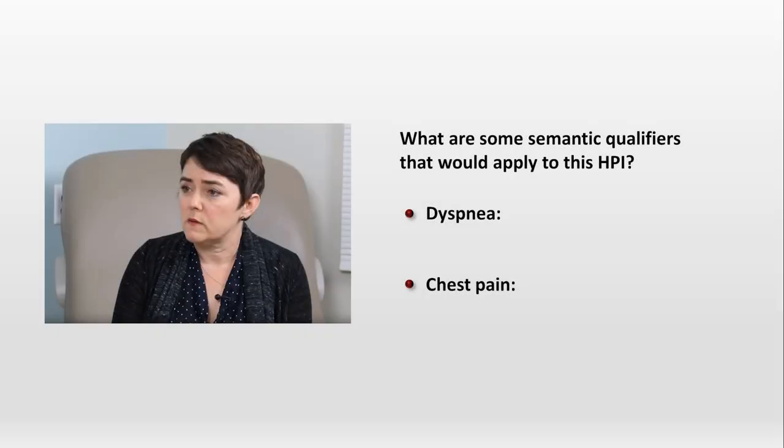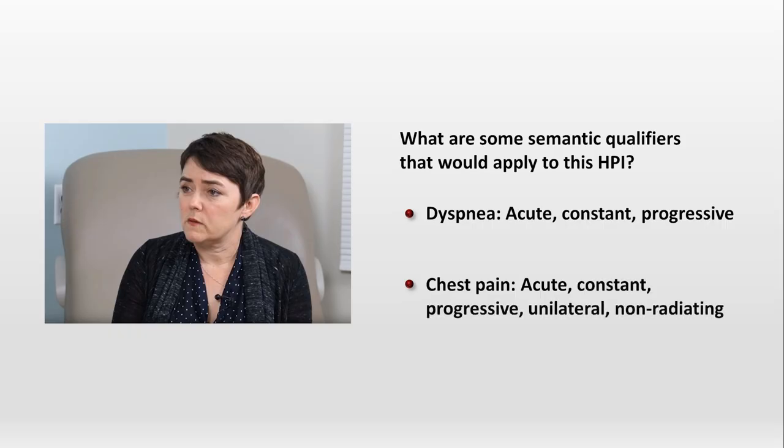Let's identify semantic qualifiers appropriate for the symptoms in this HPI. The dyspnea is acute, constant, and progressive. The chest pain is acute, now constant, progressive, unilateral, and non-radiating. You may have considered two additional semantic qualifiers that were not listed. First, her dyspnea sounded exertional — why not include that?